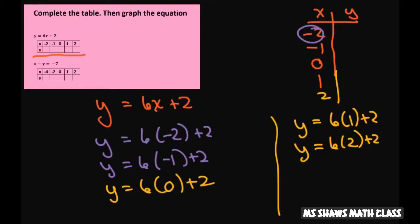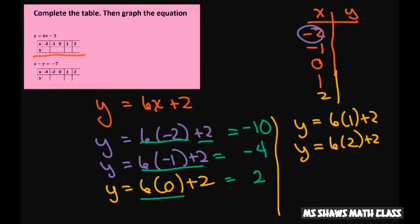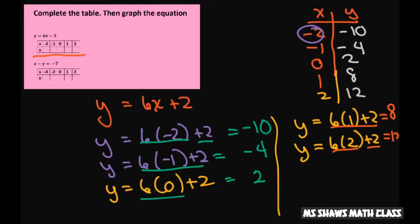Now we fill in the answers. Negative 12 plus 2 is negative 10. Negative 6 plus 2 is negative 4. 6 times 0 is 0, so that's just 2. Then 6 plus 2 is 8, and 12 plus 2 is 14. So the y values are: negative 10, negative 4, 2, 8, and 14.